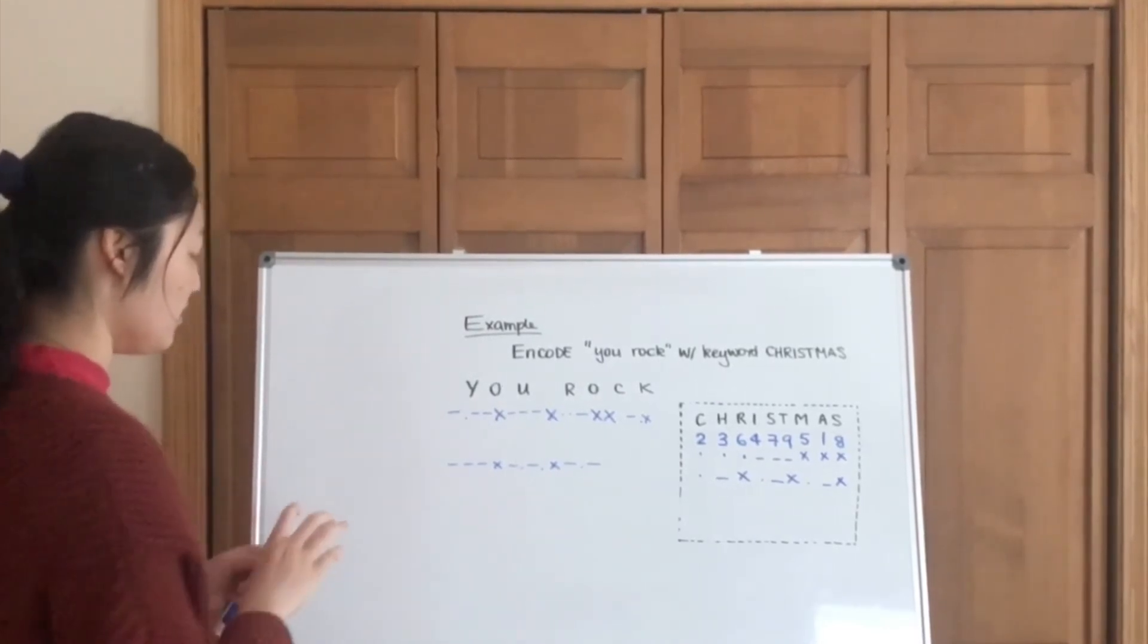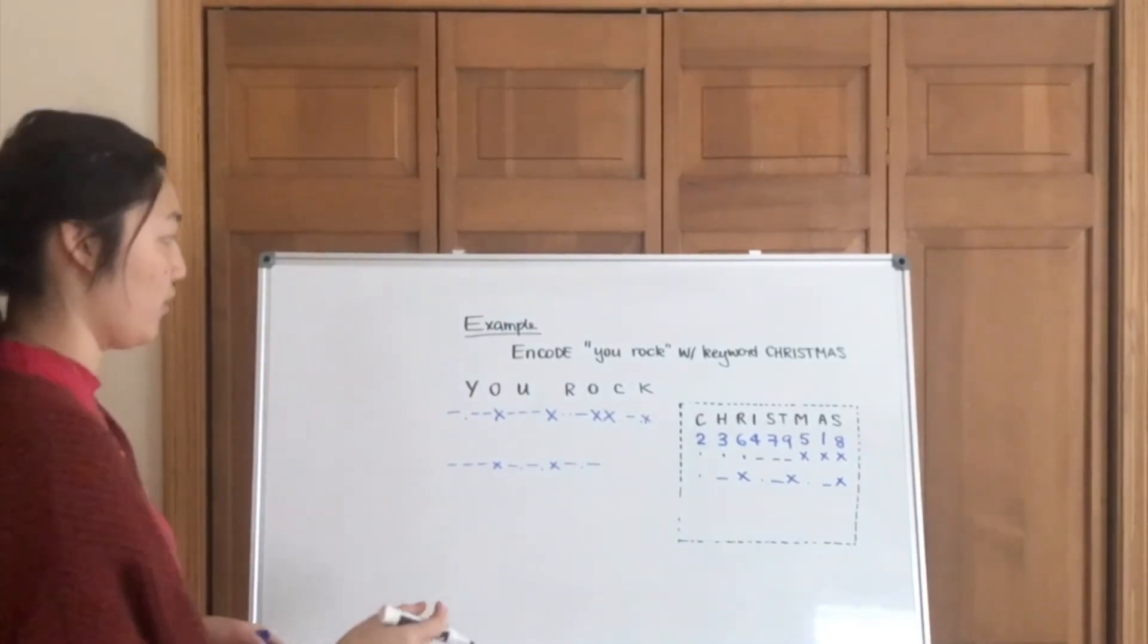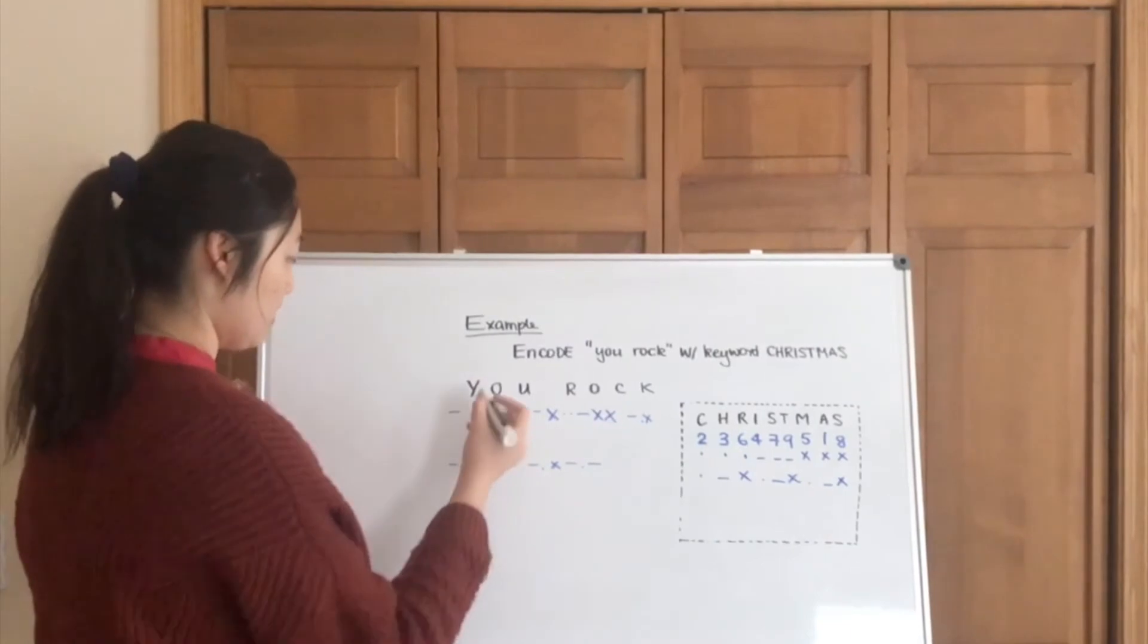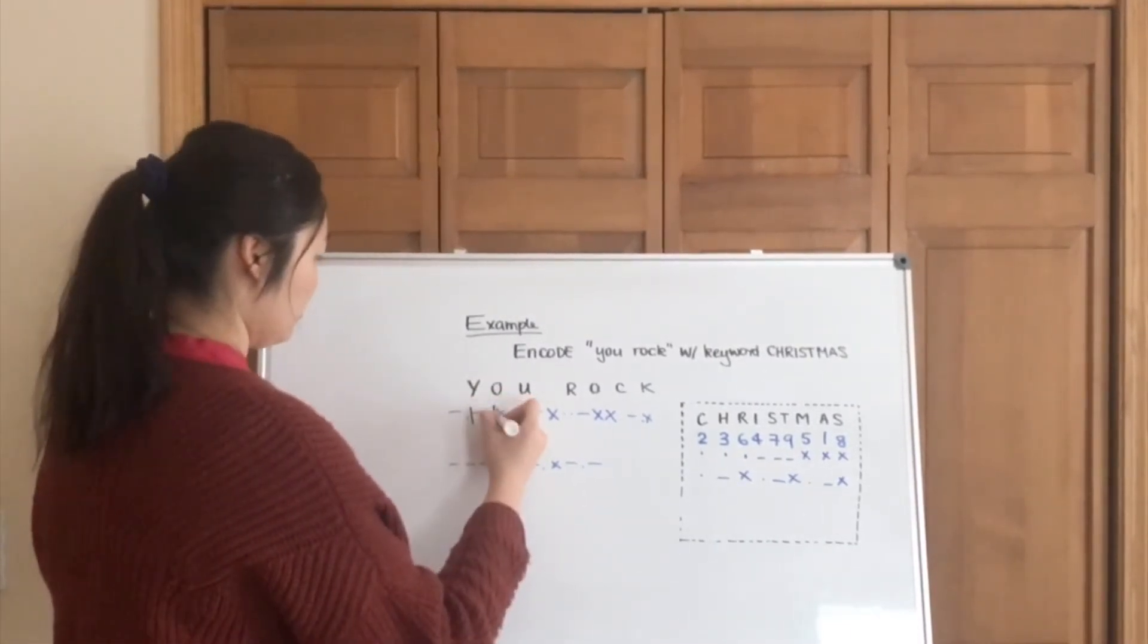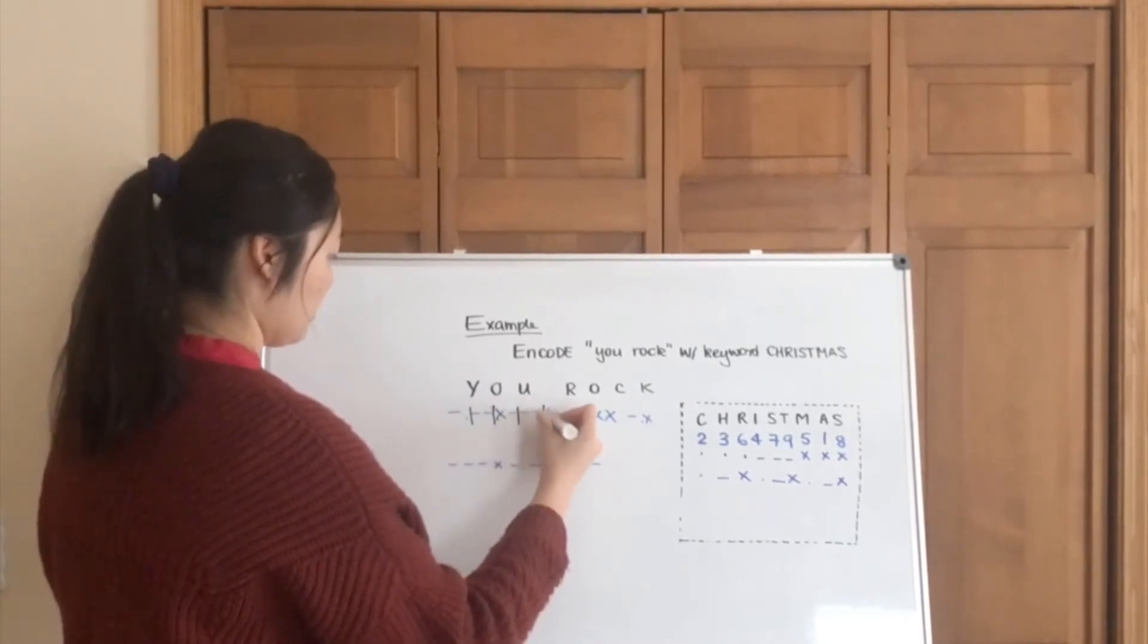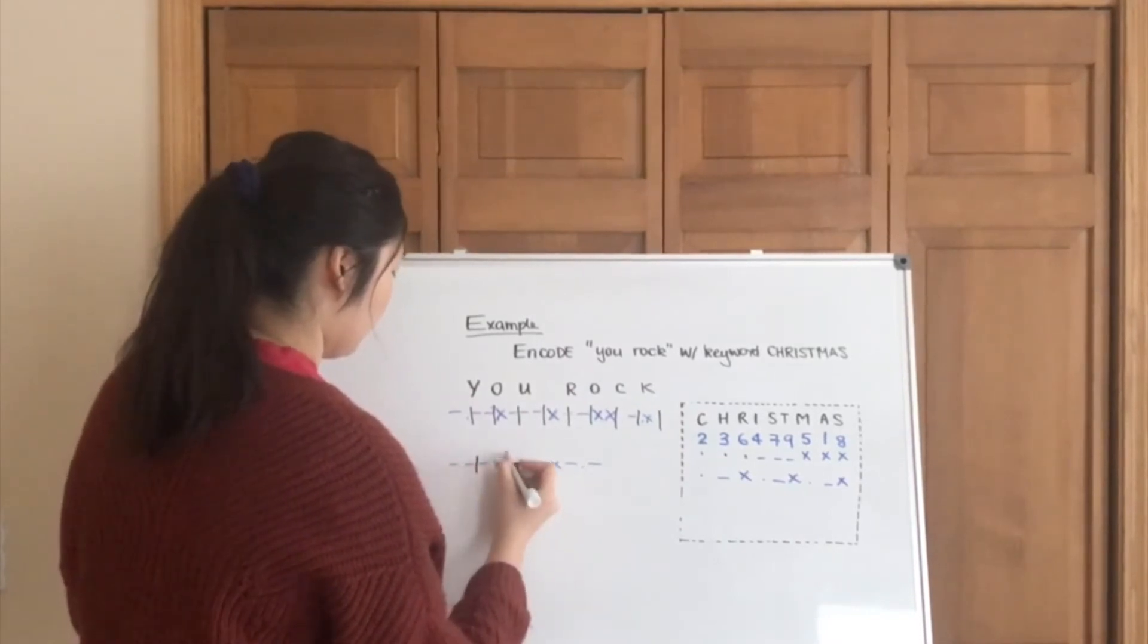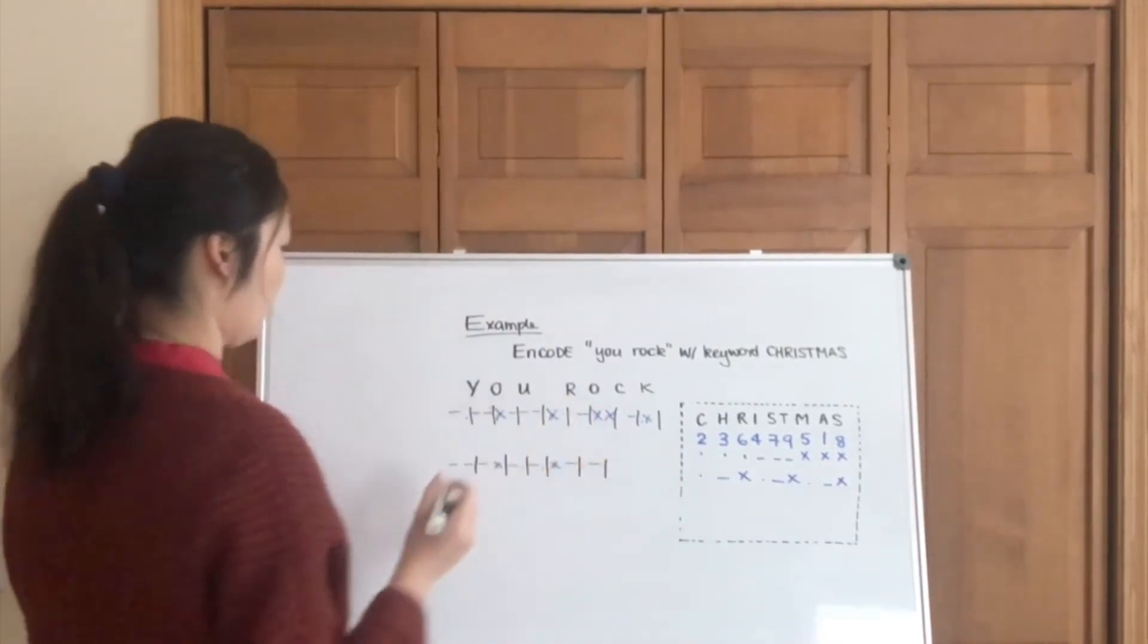Alright, and then we are going to separate this sequence series of Morse codes by two. So we're going to group them by two. I'm going to use a black marker to show. So count two, count two, count two, et cetera.